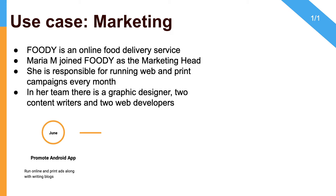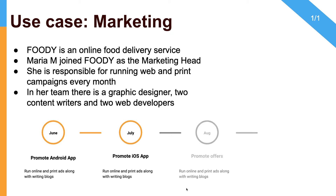They also have two web developers who will be developing web pages or landing pages. They run a campaign every month. In June, they will promote their Android app by running online and print-based ads and writing blogs. In July, they will promote their iOS app. In August, they will run campaigns promoting their offers. In September, they will be promoting their point-based system. This is their timeline or roadmap for the next few months.